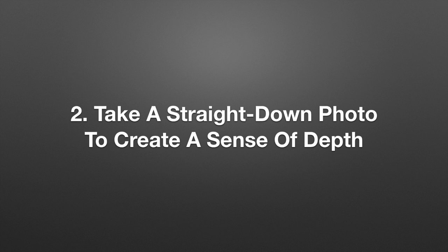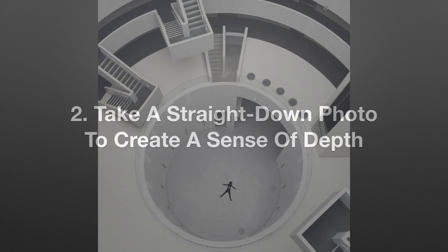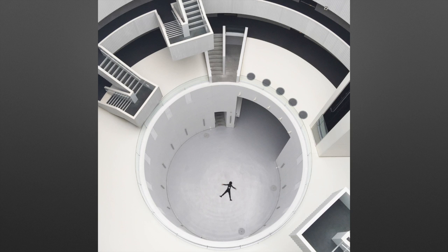Sometimes you will have to use the totally opposite technique. When you are at the top of a tall building, take a straight down photo to create a sense of depth. One of the big benefits of looking down is that the perspective often gets really great. I went all the way up and held my phone straight to capture most of the building. A tiny person in the picture helps convey the large scale of the building.